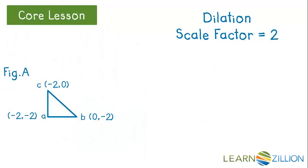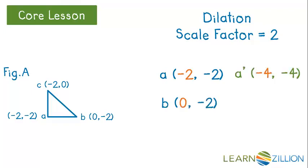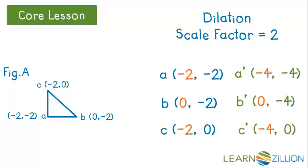We're going to look at another example, and this time we won't use the graph until we're done. With a scale factor of 2, we multiply each coordinate by 2. Point A is (−2, −2), so A prime will be (−4, −4). B is (0, −2), so B prime will be (0, −4). C is (−2, 0), so C prime will be (−4, 0).